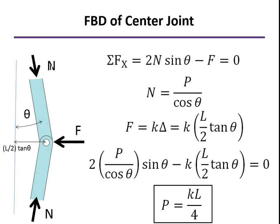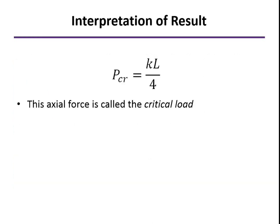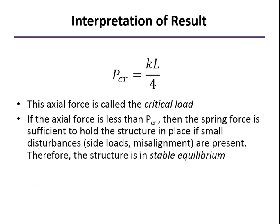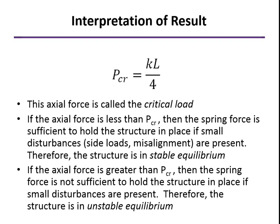Notice this solution is good for any value of theta. What we found is that if we have a value of P that can cause this to be in equilibrium at theta equals 10 degrees, we can move this over to theta equals 20 or 30 degrees without changing the value of P. We call this axial force the critical load, hence the CR as the subscript. If we have an axial force less than this, then the spring force is going to be able to hold things in place. We call that stable equilibrium. If we exceed P critical, then the spring is no longer able to hold things in place, and even a tiny disturbance will cause this to go out of equilibrium. We call the structure then as in unstable equilibrium.